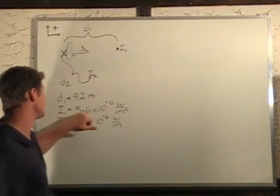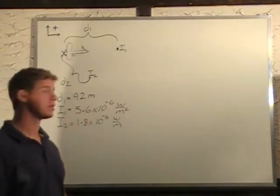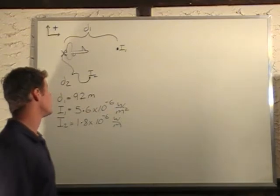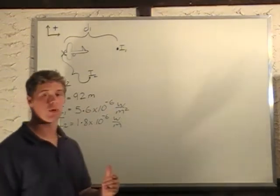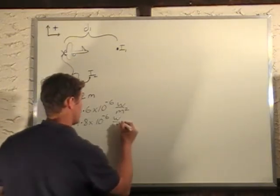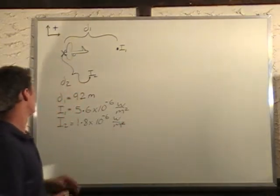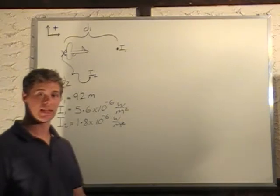We're told that that distance is 92 meters, and that the intensity of the sound is 5.6 times 10 to the minus 6 watts per square meter. We're given another intensity of 1.8 times 10 to the minus 6 watts per square meter and asked what distance away we have to be to hear that.